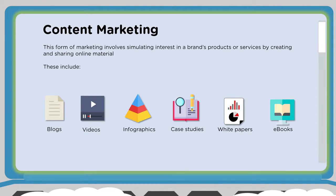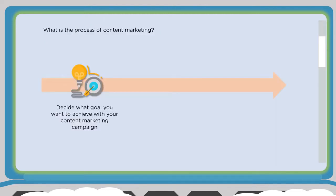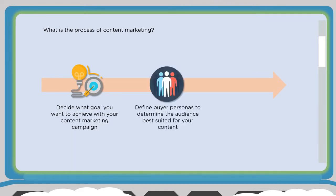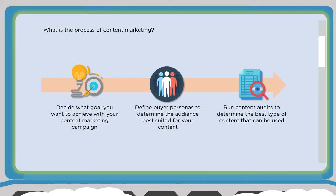The content marketing process starts with deciding what goal you want to achieve with your campaign. Then you define your buyer personas to determine the audience best suited for your content — what are you creating and who is it for? You also want to run a content audit to determine the best type of content to use.